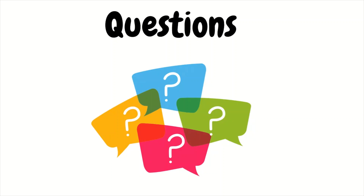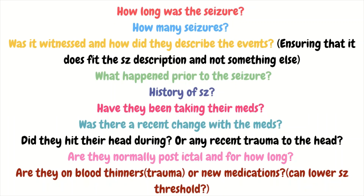Now let's get into some of the questions you should be asking. These include: how long was the seizure? How many seizures were witnessed, and how did they describe the events? What happened prior to the seizure? Is there a history of seizures? Have they been taking their medications like they are supposed to — was there a recent change with their medications? Did they hit their head during the seizure? Have they had any recent trauma to the head? Are they normally post-ictal and for how long? Are they on any blood thinners, or did they start taking any new medications recently?